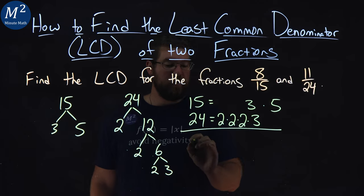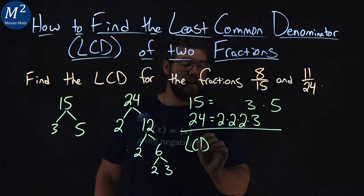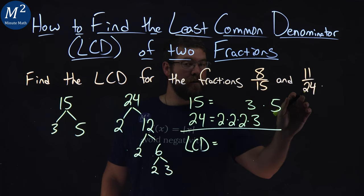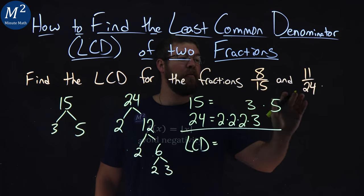Line that up. This is going to be the LCD, Least Common Denominator, because remember, Least Common Multiple of the denominators is equal to the least common denominator of the two fractions.